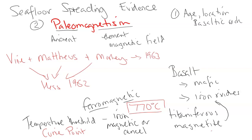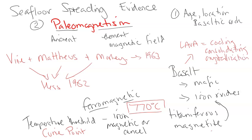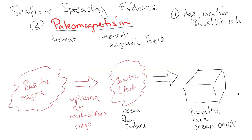So what Vine, Matthews, and Morley found is that when basalt comes from lava and is cooling and crystallizing, the magnetite crystals, as they cool down and organize themselves from a liquid melt into a solid basaltic rock structure, naturally point toward the magnetic field of the Earth. As shown in this diagram, you begin with basaltic magma deep in the asthenosphere.